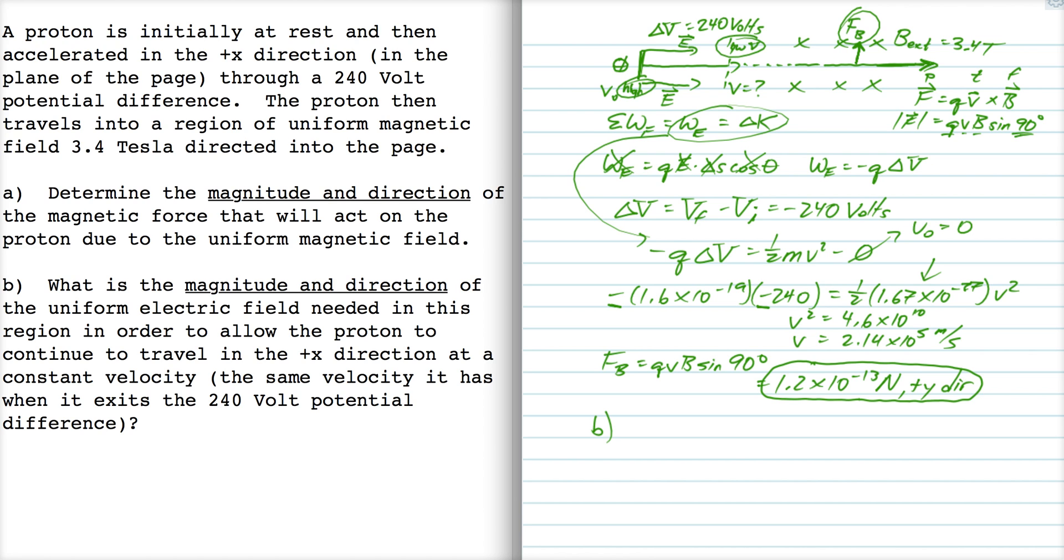Now for part b. We need a uniform electric field that allows the proton to continue to travel east at constant velocity. So what electric field will allow the proton to move that direction? It would have to be an electric field that balances out the magnetic force.